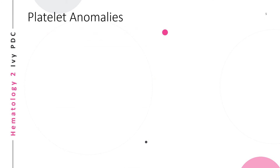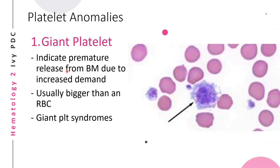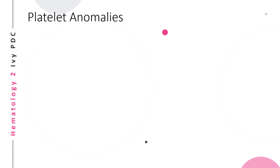The first platelet anomaly is the giant platelet. Giant platelets indicate premature release from the bone marrow due to increased demand in the circulation. They are usually bigger than the red blood cell, as seen in the picture. Giant platelets are usually seen in giant platelet syndromes.